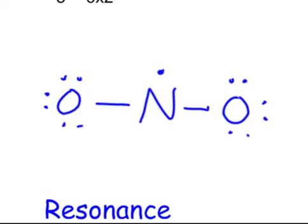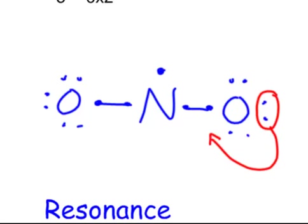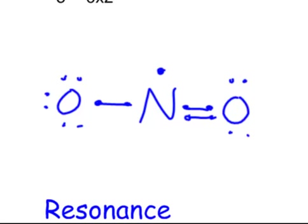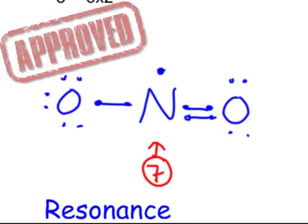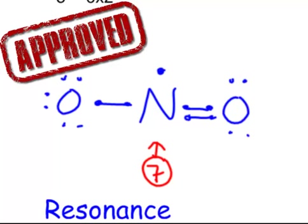Look at nitrogen: it has one, two, three, four, five. We want an octet around the central atom, but we're never going to get an octet because we have an odd number. But we can get close — so we move a pair of electrons to make a double bond. Both oxygens still have octets, and nitrogen in the middle now has two, four, six, seven electrons. That's as close as we can get to an octet, so we are done. That is the Lewis dot structure of nitrogen dioxide.